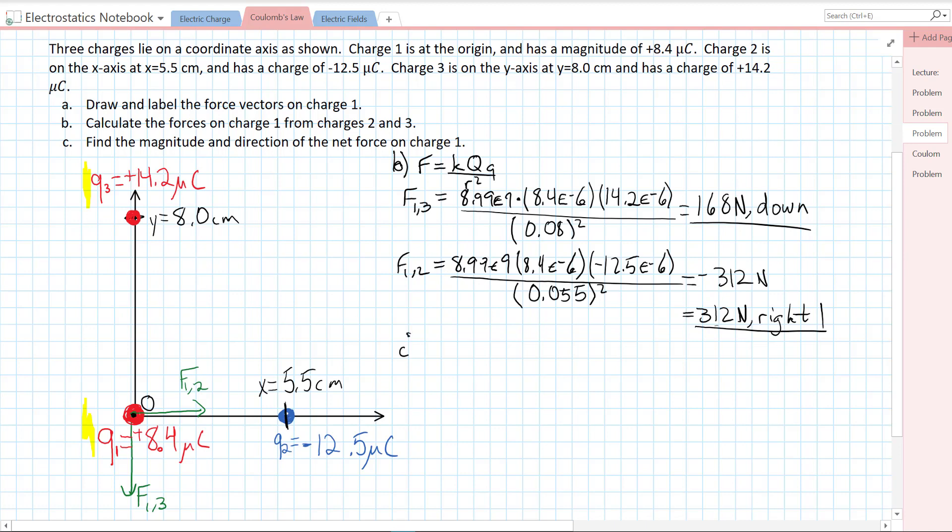For part C, we need to find the magnitude and direction of the net force. We know that the net force is just the vector sum of all the individual forces. Let's draw our initial forces and connect them tail to tip.